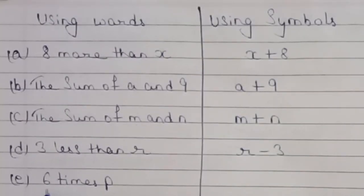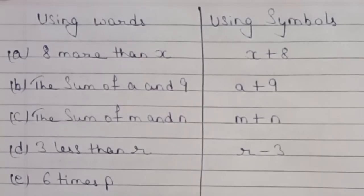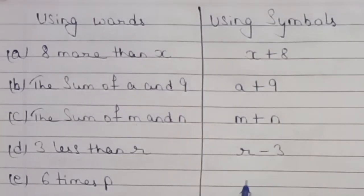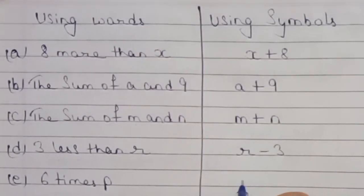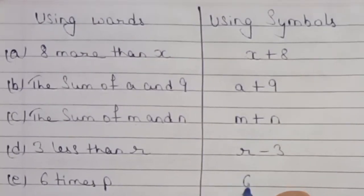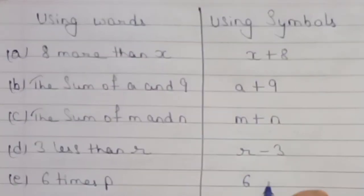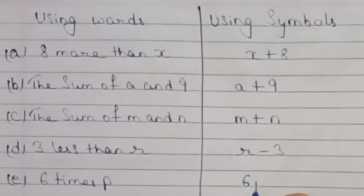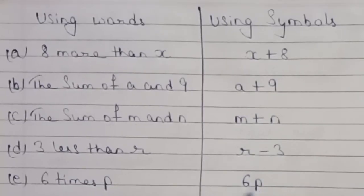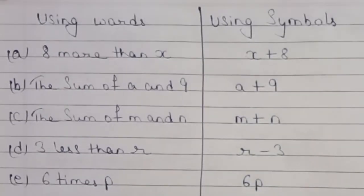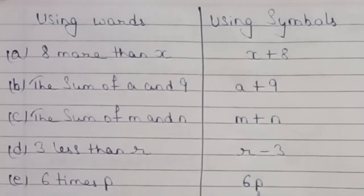E: 6 times p. If you have 6 times p, how many times do that? So the answer will be 6p.